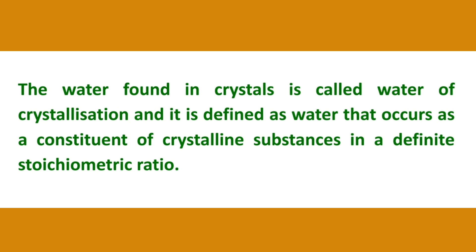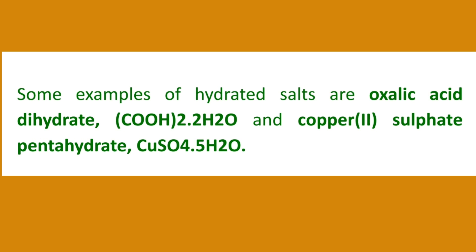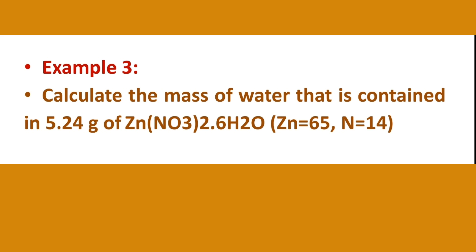The water of crystallization occurs in a definite stoichiometric ratio in crystalline substances. Examples of hydrated salts include oxalic acid dihydrate (COOH)2·2H2O and copper sulfate pentahydrate CuSO4·5H2O. A problem involves finding what is contained in 5.24 g of a hydrated compound ZnO3·2.6H2O.